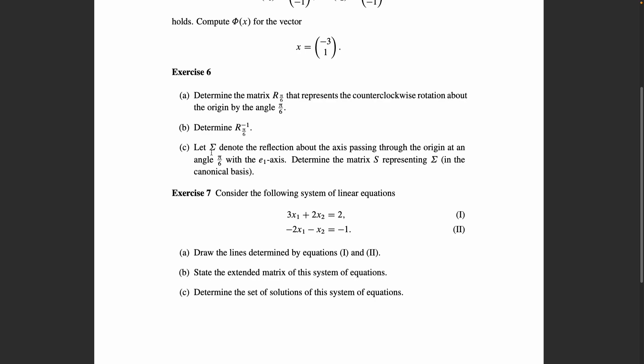Now sigma denotes the reflection about the axis passing through the origin at an angle pi divided by six with the e1 axis. So this is the axis spanned by the first canonical basis vector and we have this axis which encloses the angle pi sixth with this axis. Now determine the matrix S which represents this reflection here. You should look at chapter six, how we did that, how such computations can be done, and then together with part a and b, I hope you can figure that out.